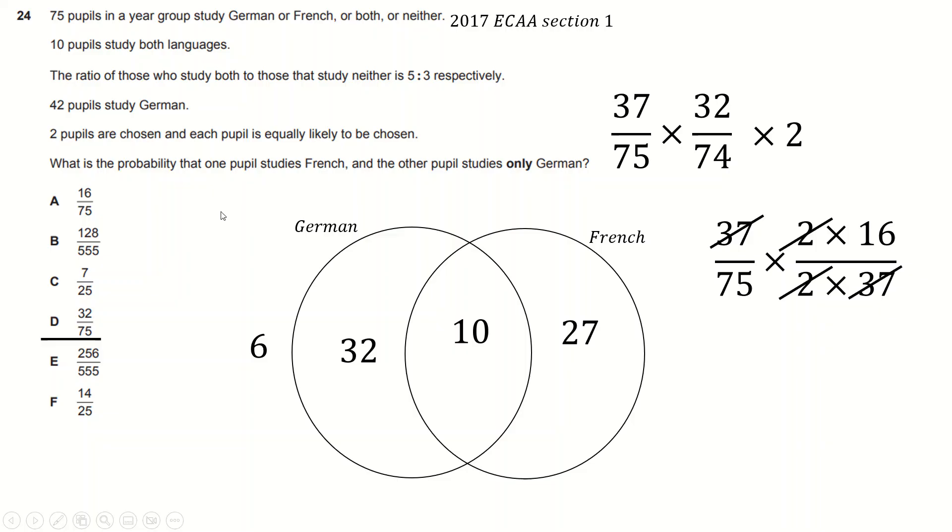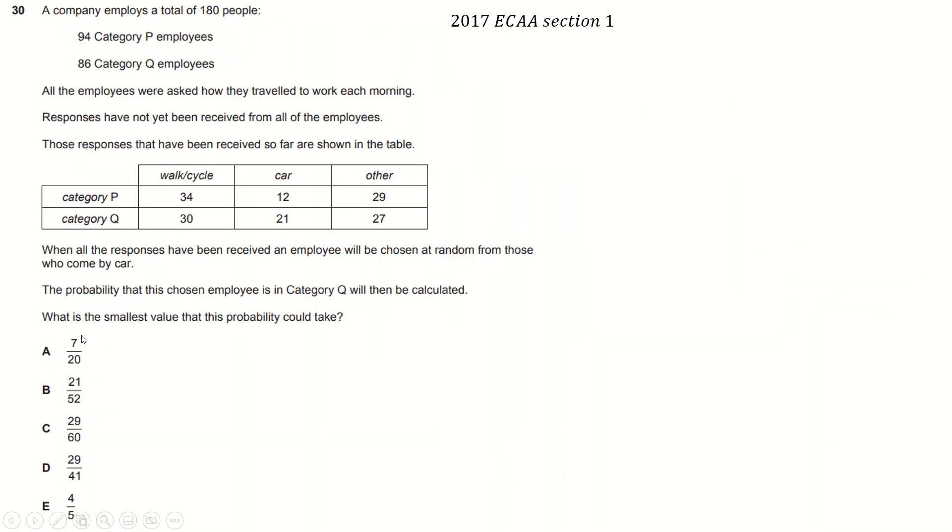So we'll just times this answer by 2 to get 32 over 75. So small sting in the tail, just be careful of the wording of questions. If it had said what's the probability the first studies French and the second studies only German, then it would have been this one here, but it didn't say that, so it's going to be this one here. Just be careful.